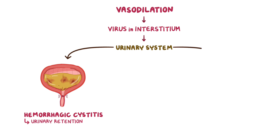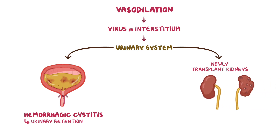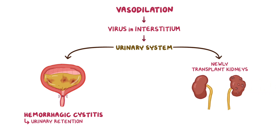BK virus often spreads to newly transplanted kidneys and causes interstitial and tubular damage. As a result, the kidney stops functioning, which is called nephropathy. Sometimes damage to the kidney is so severe that it can even result in transplant rejection.